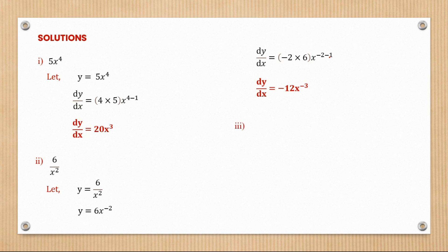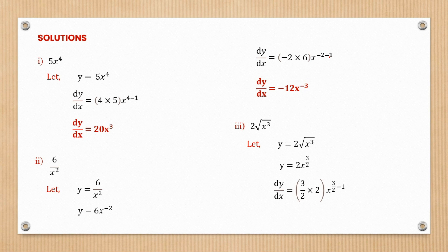The third example is 2 times the square root of x cubed. We rewrite the square root as a power of one half, so the expression becomes 2x to the power three over two. Now dy/dx equals three over two times two, which is three, and the new index is three over two minus one equals one half. So dy/dx equals 3x to the power one half, which can also be written as 3 root x.